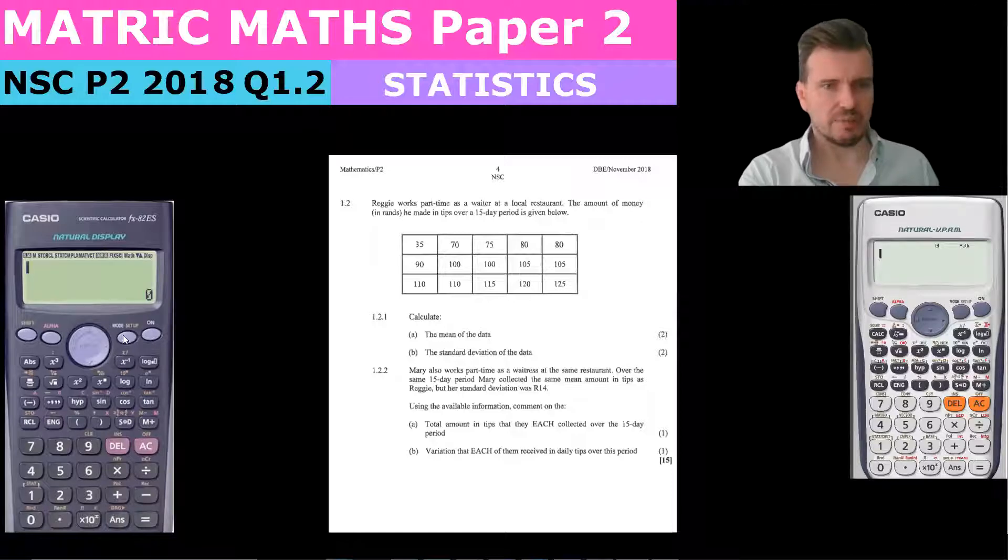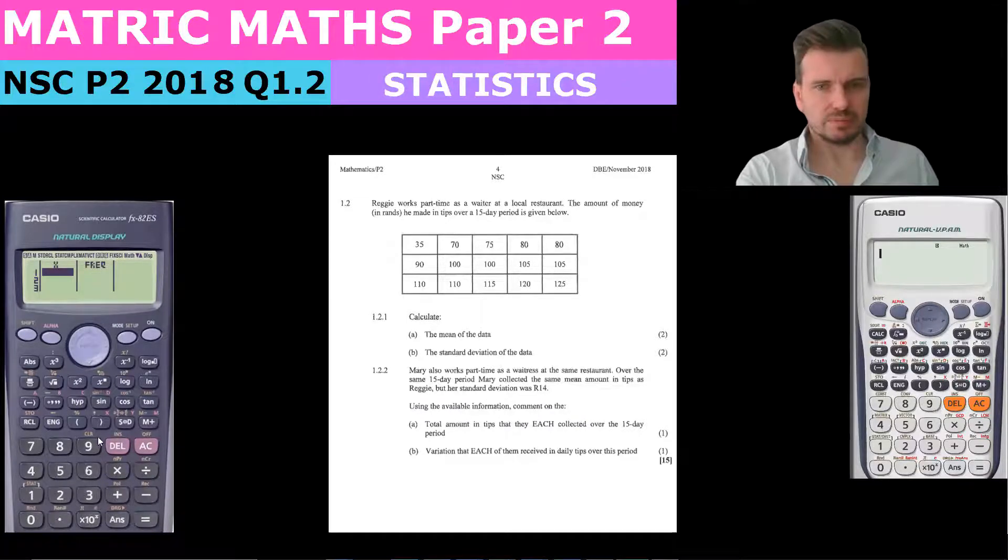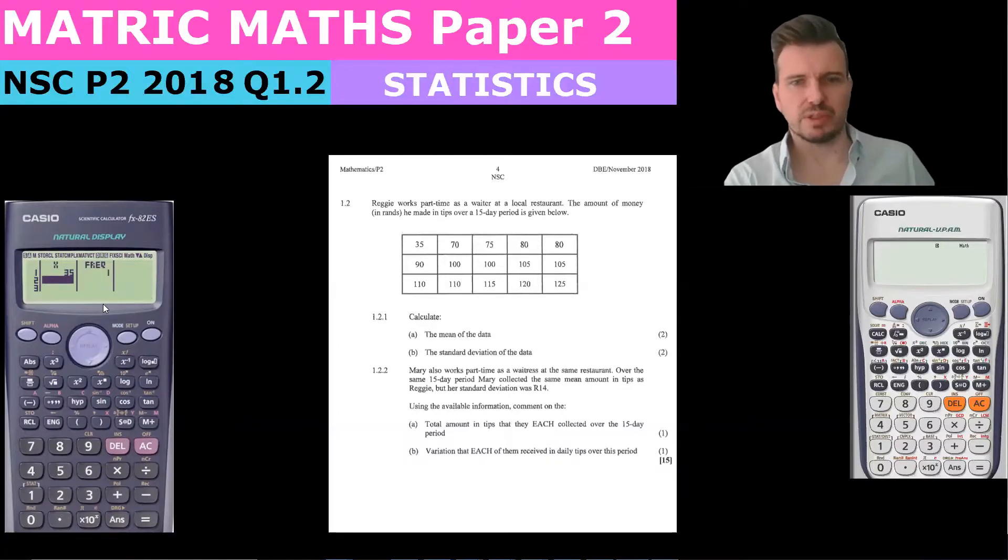Now when I go back mode stats, then put in my variable, and so in this they're wanting the mean, so if I was to put in 35 equals, we see that it just adds a frequency of one.